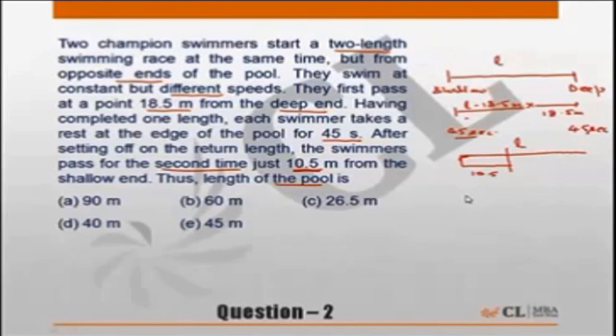Similarly, the person who started from the shallow end would have covered the length of the pool and then rested for 45 seconds and then come back to meet the other person 10.5 meters from the shallow end. So in this case, the person has covered this length, which is length of the pool, and this length will be L minus 10.5. So he's covered the length of the pool plus the length of the pool minus 10.5, or twice of length minus 10.5 meters.